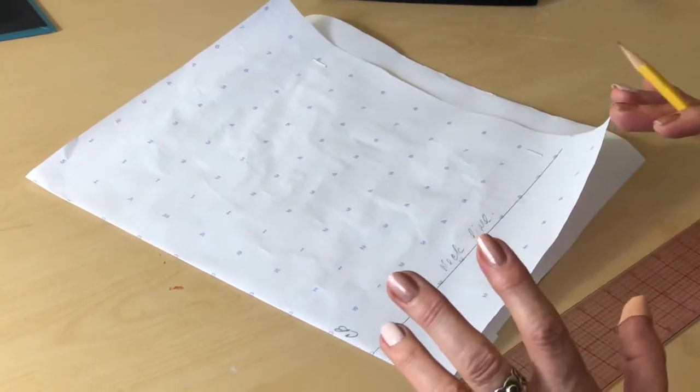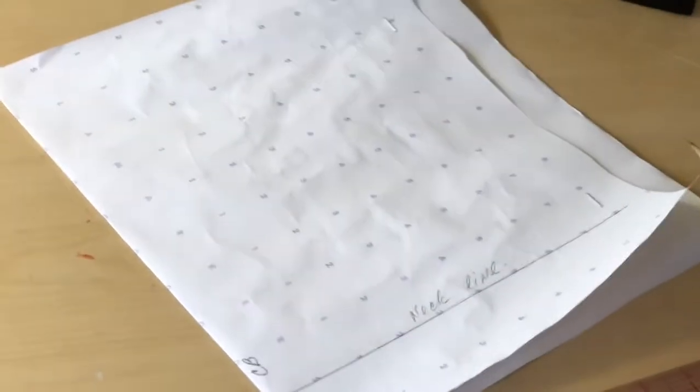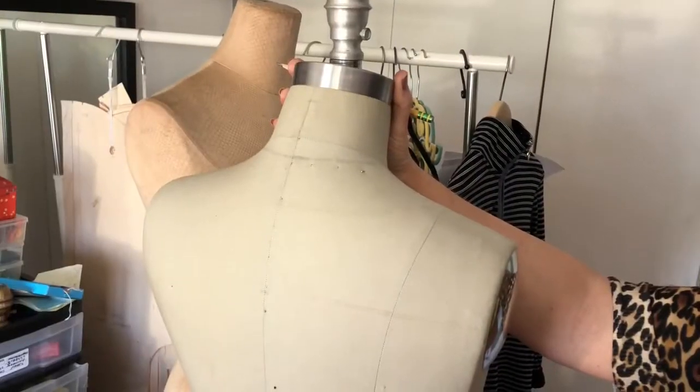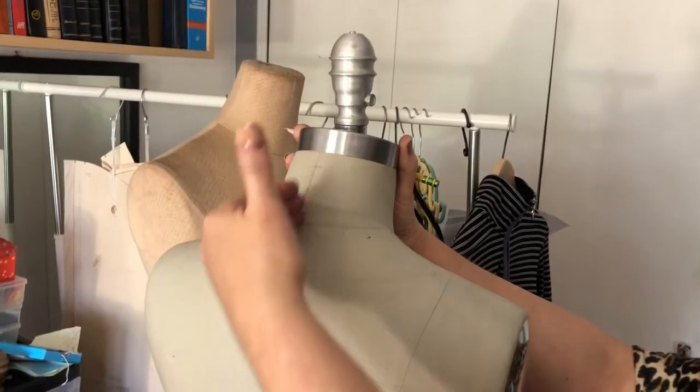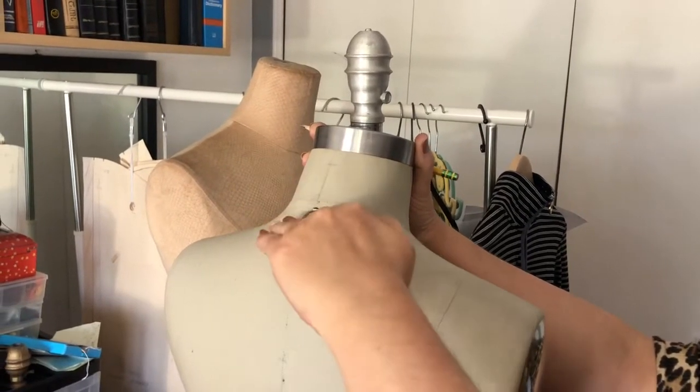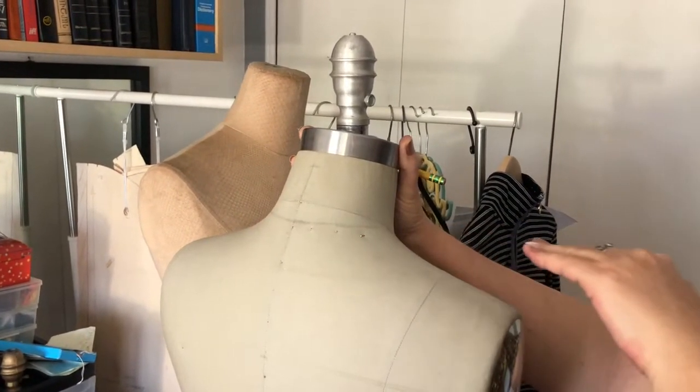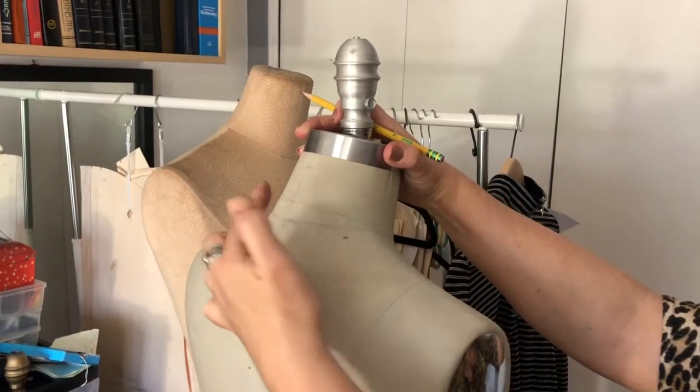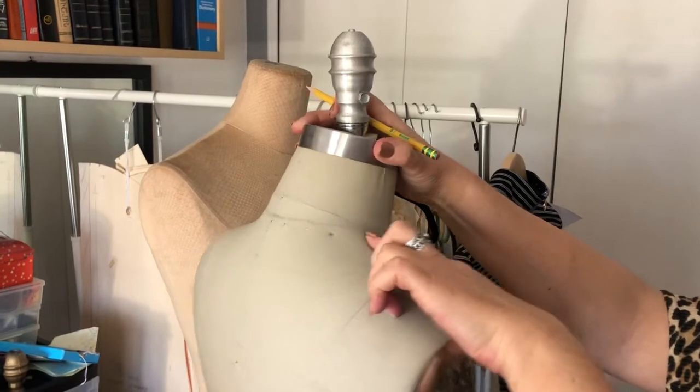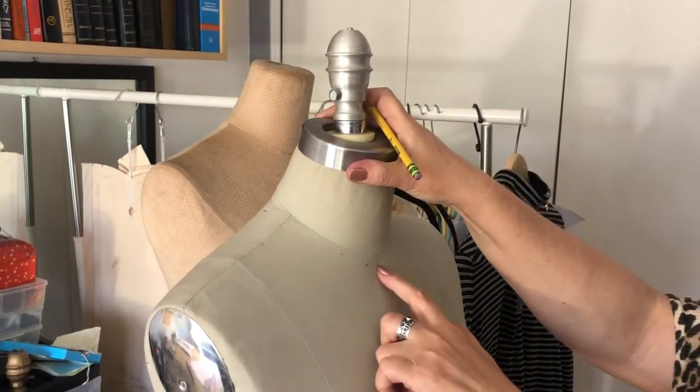In order for us to see better I'm going to show it on the dress form. Okay so imagine this center back line is my fold on the paper and then the straight line that I placed is going to become my neckline where I'm going to place the back neck measurement plus the front neck measurement.